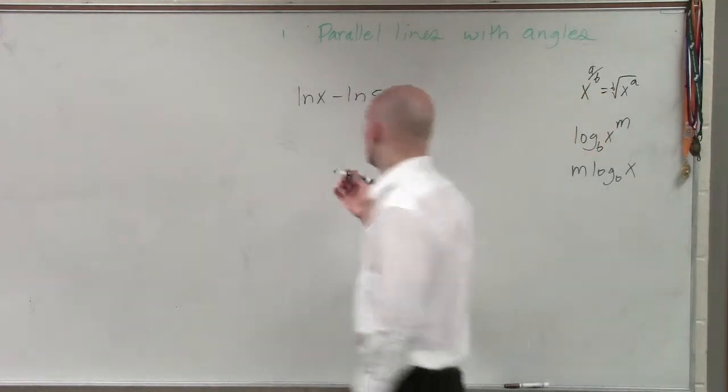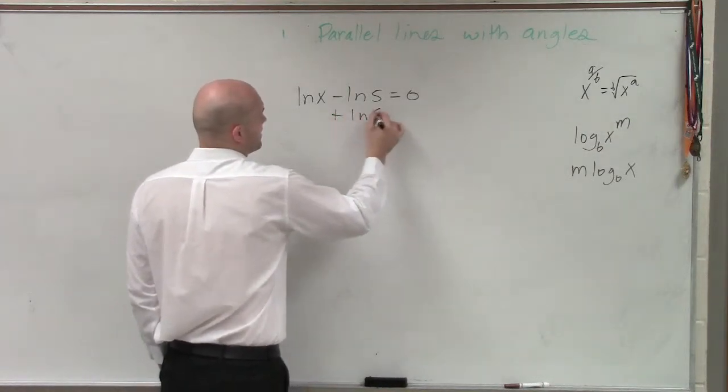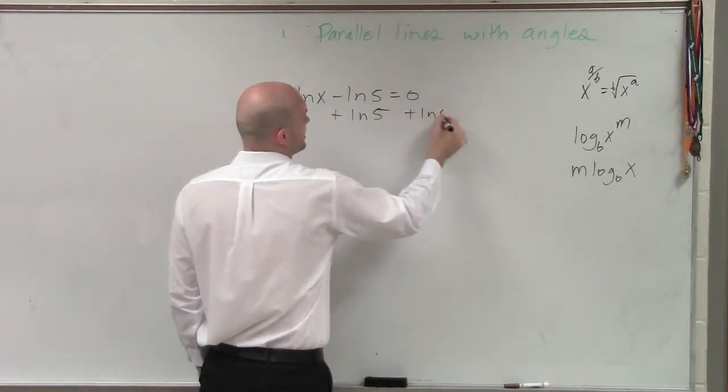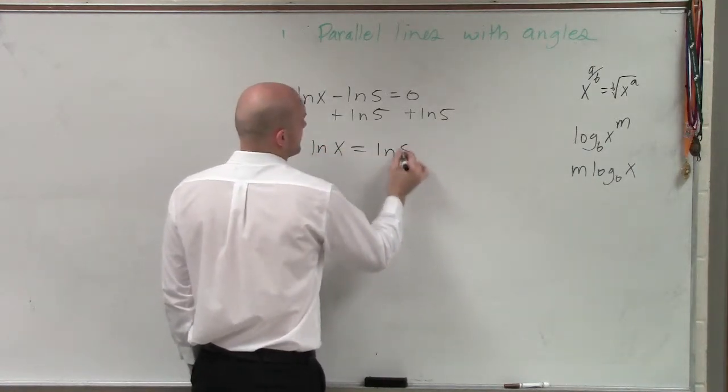Yeah, we could go and do it that way. That's not a problem. Fine. So you could add ln of 5. So you could add ln of 5 to both sides. So therefore, you have ln of x equals ln of 5.